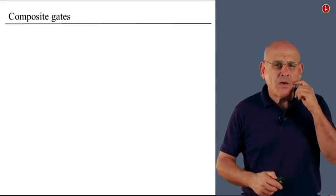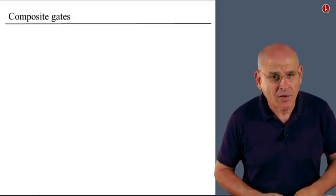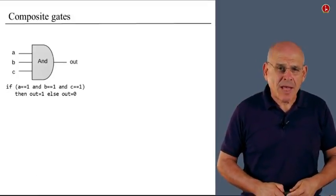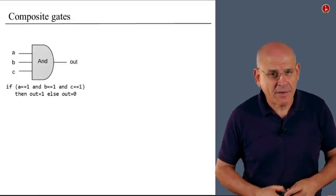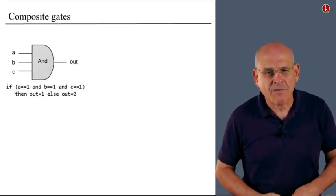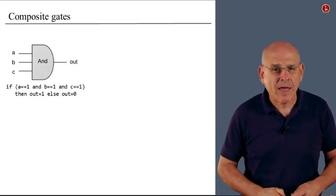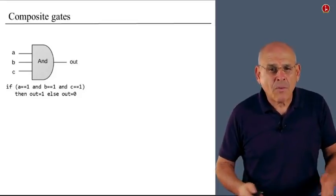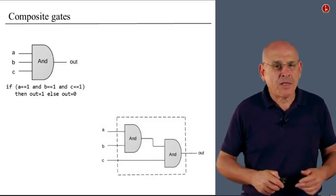In particular, we can use these gates to create composite ones. So for example, here's a three-way AND, which is an extension of the simple two-way AND. And one way to build it is to use this trick here.